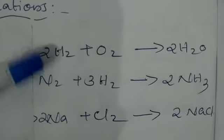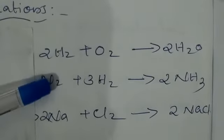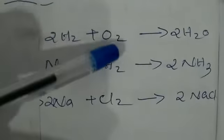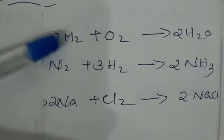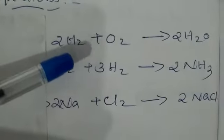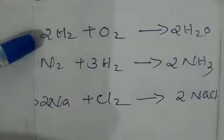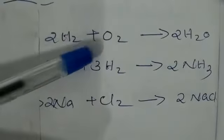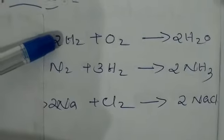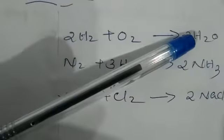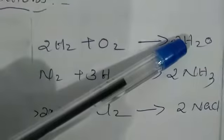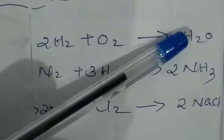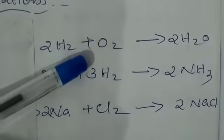In a chemical equation there are reactants and products. Reactants are the substances taking part in the chemical reaction. In the first equation, hydrogen and oxygen are taking part in the chemical reaction, so these are called reactants, and water is the product. The substance obtained as a result of the chemical reaction is called the product.